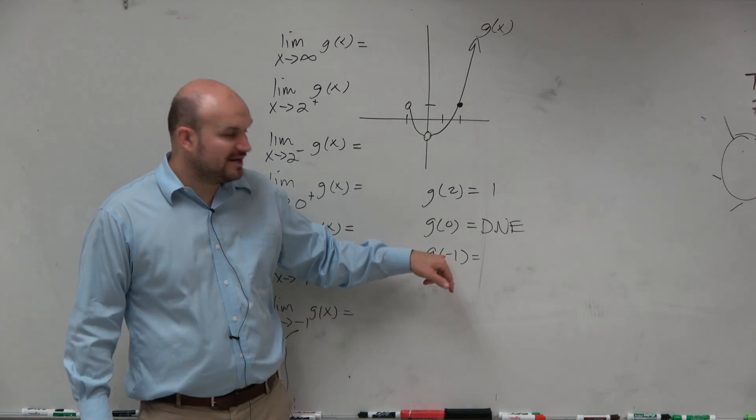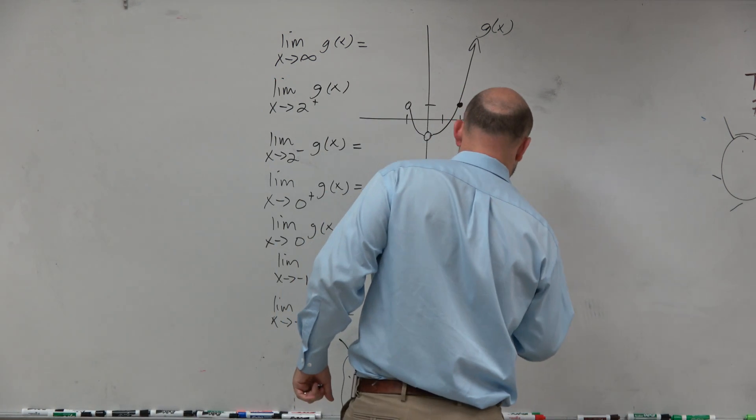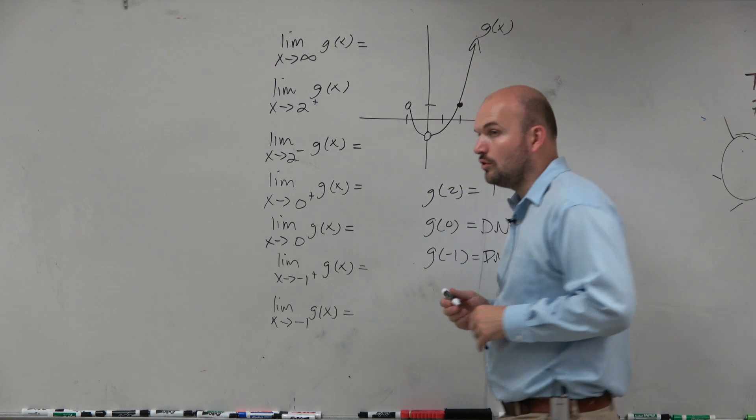And then over here, we have g(-1). Again, we go over to -1, and again, that does not exist. So I'll add a hole.